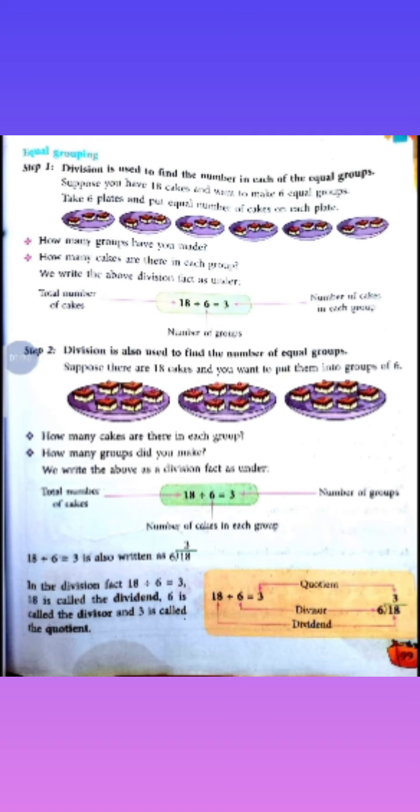Okay? So, first question: how many cakes are there in each group? Answer: 6. And second question: how many groups did you make? 1, 2, and 3 — so 3 groups. So, we write this as a division fact: 18 divided by 6 is equal to 3.